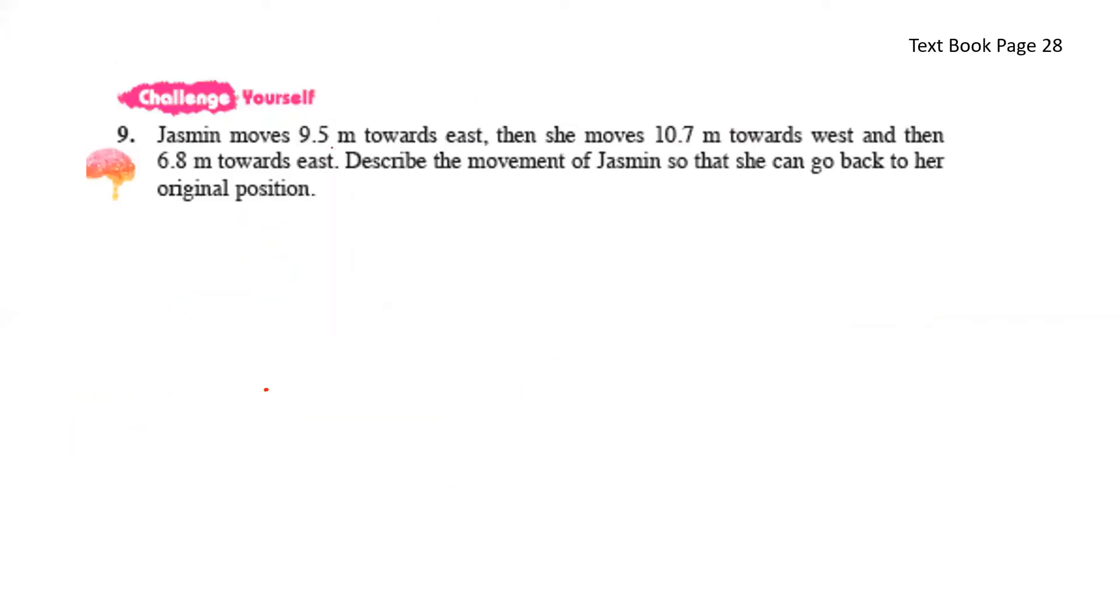Jasmine moves 9.5 meters towards the east. So here we have Jasmine, 9.5 to the east. And then she moves 10.7 meters towards the west. 10.7. And then 6.8 meters towards the east. And back to the east, 6.8.